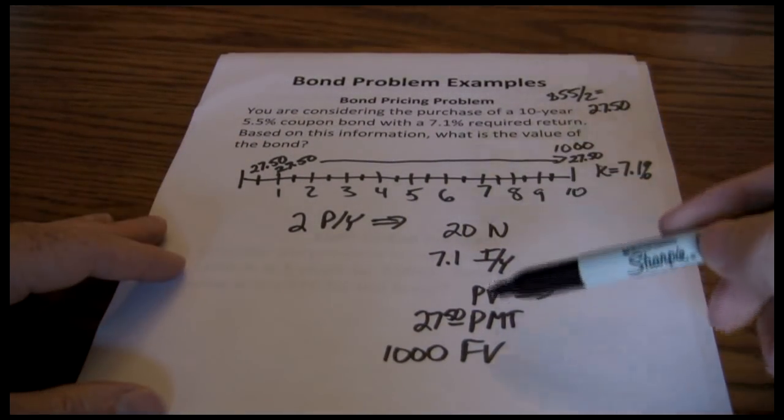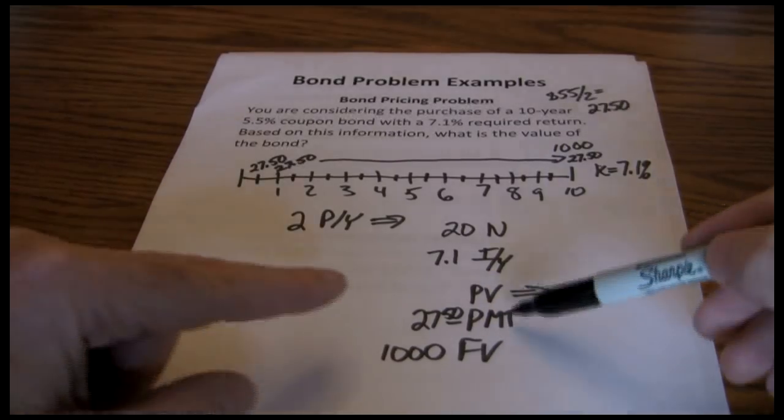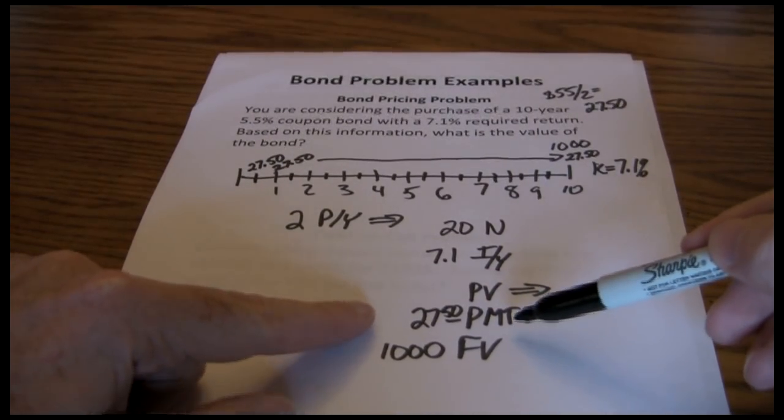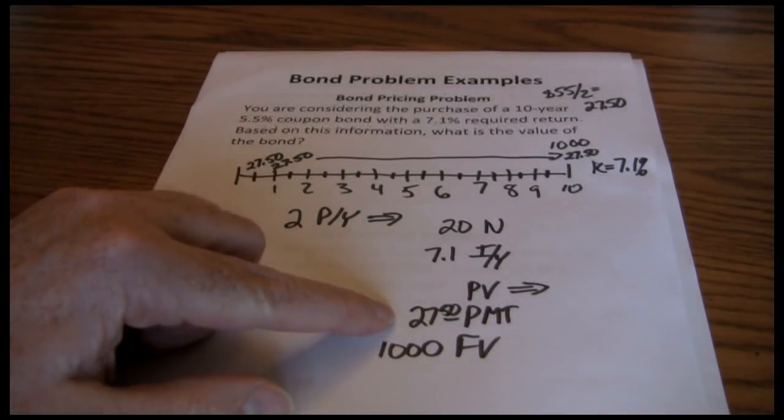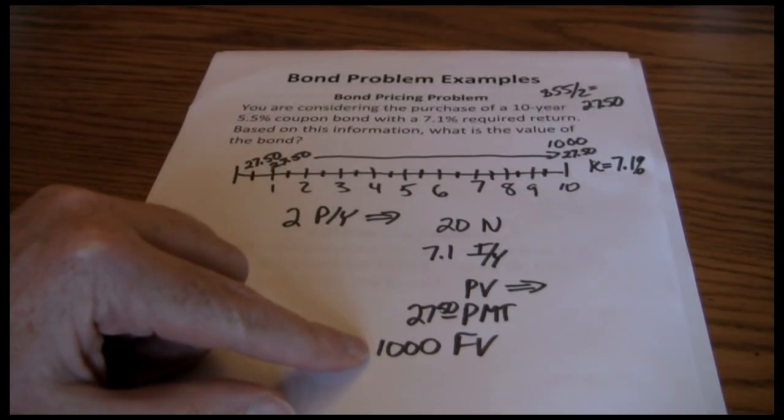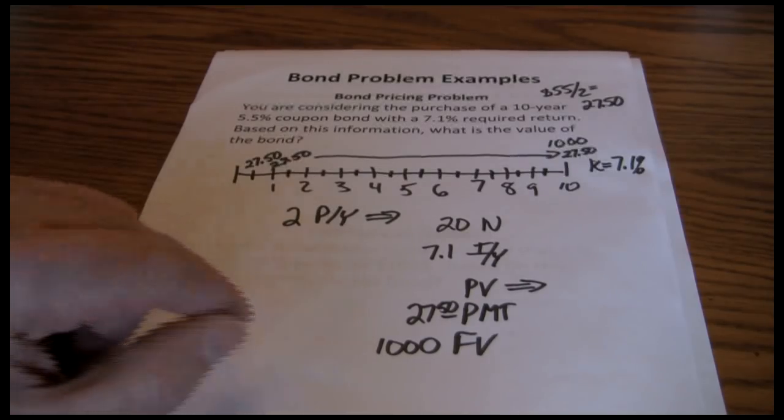So now we plug these into our financial calculator. Note that the payment and the future value are both positive here. That's because as a bond investor, you're going to pay money today to buy this bond. And in exchange for that money you give up today, you're going to receive that coupon payment every six months. So your payment is positive, it's coming to you. And you're going to receive the $1,000 at maturity. It's positive, so it's coming to you.